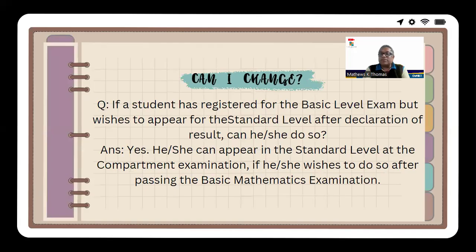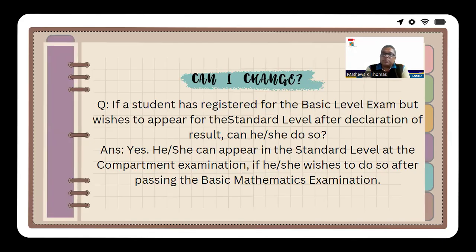If you want to pursue mathematics in class 11 and 12, you need to opt for standard maths. Some students make the mistake of choosing basic maths. If you're taking standard maths, the option to drop or continue maths in class 11 is with you. But if you're taking basic maths, you definitely cannot opt for maths — and then at the end of the year realizing you want to do maths would be a problem.